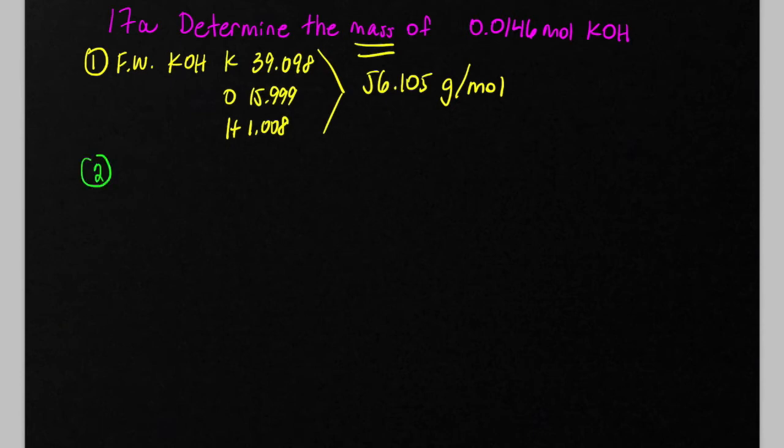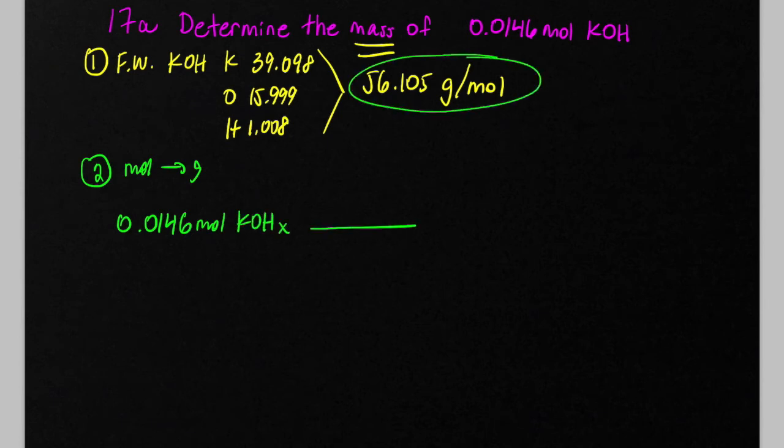So the second step here is we want to convert from moles to grams using dimensional analysis, so we have 0.0146 moles of KOH, and we multiply by the molar mass, or the formula weight here.